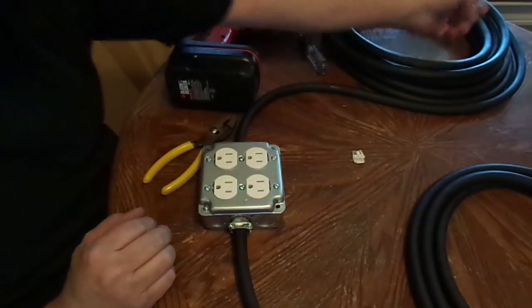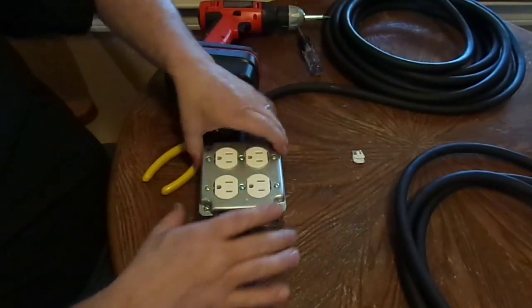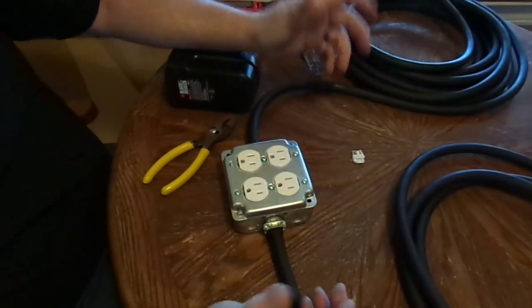So now we need to put the male end on here and put the next box on here and then the final box, and there's your stringer.